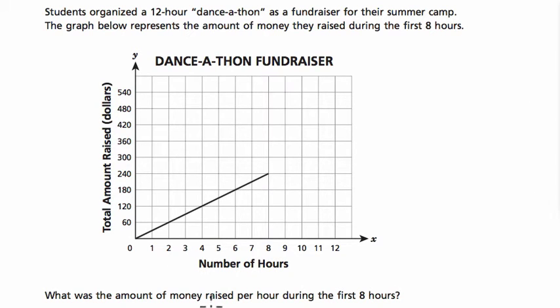So they want to know per hour, right? They want to know what kind of unit rate here. I noticed that we start at 0,0, so there's no money in the beginning, and after eight hours they reach $240. That's the point (8,240).